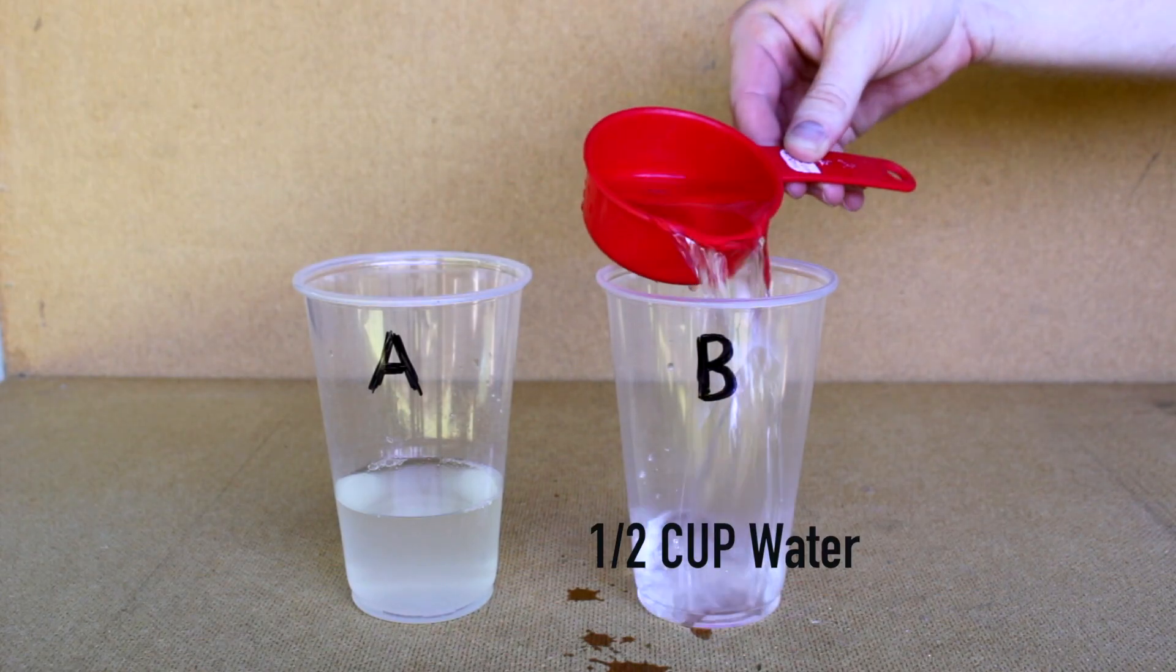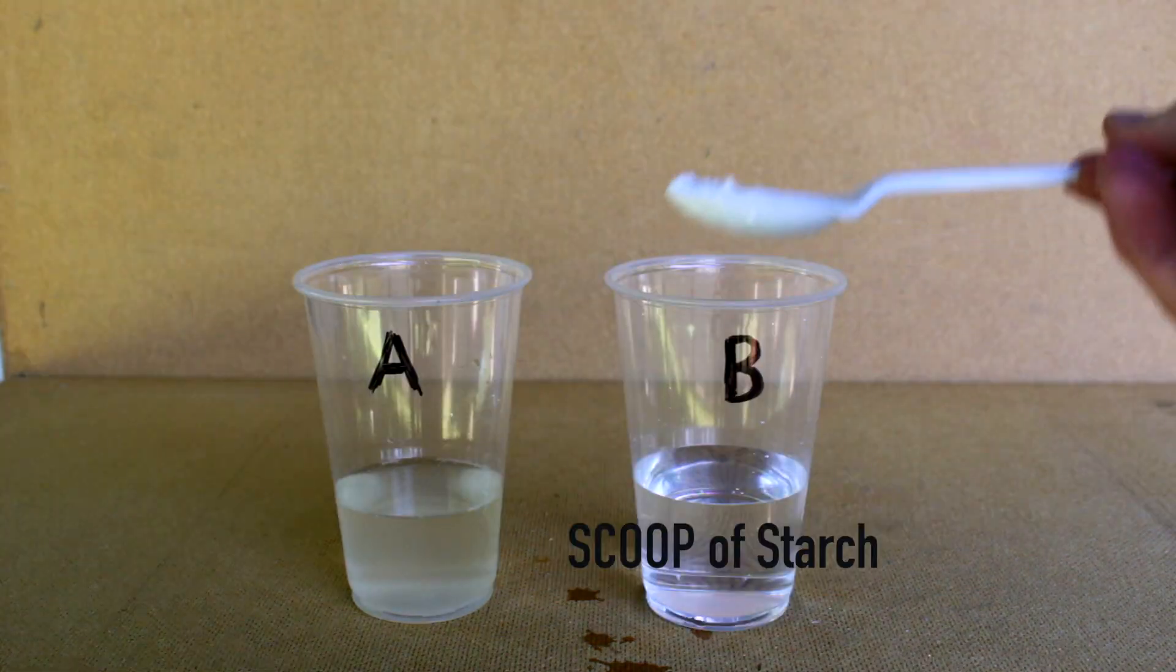For solution B, add half a cup of water, 3 tablespoons hydrogen peroxide, and a scoop of starch.